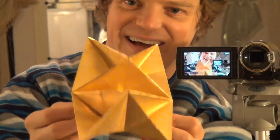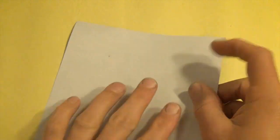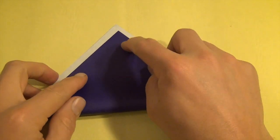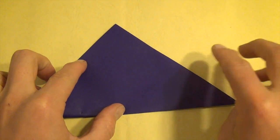Alright, ready, set, here goes. So we're going to start right side up, and valley fold in half diagonally both ways.